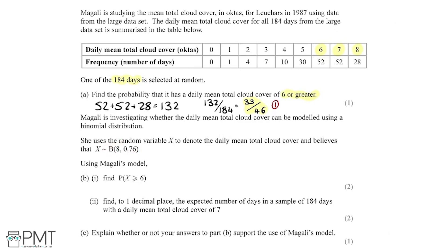Using Megali's model, part B asks us to find the probability that X is greater than or equal to 6. The issue is that our calculators are set up to work out probabilities using the binomial distribution in the format where we have a random variable less than or equal to something, rather than greater than or equal to something. So we need to write it in that form to use the calculator.